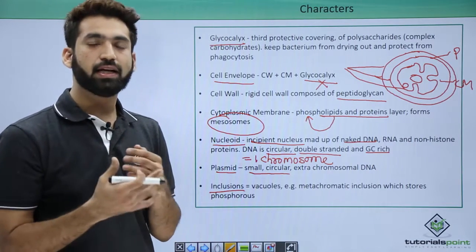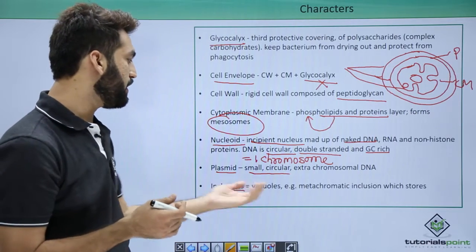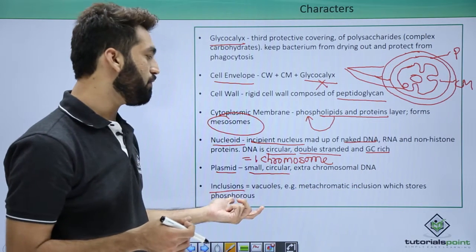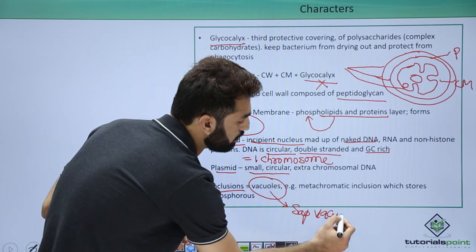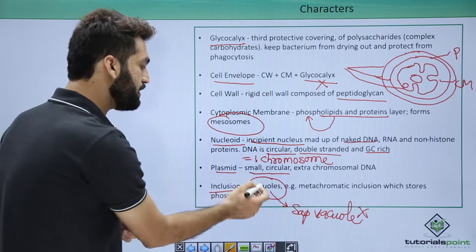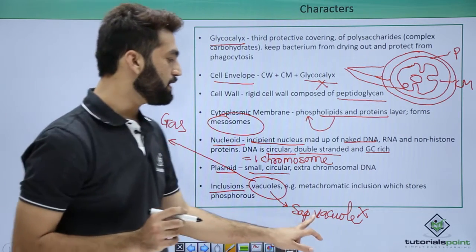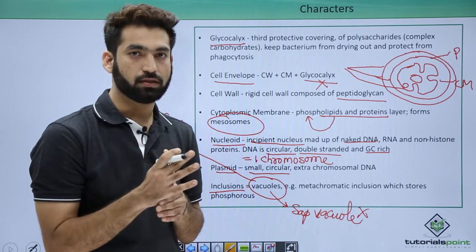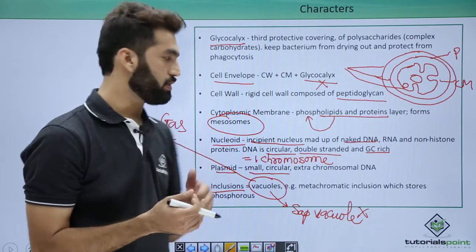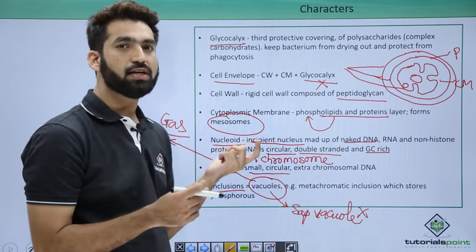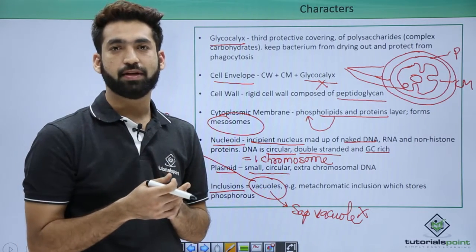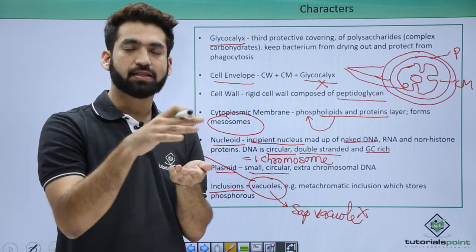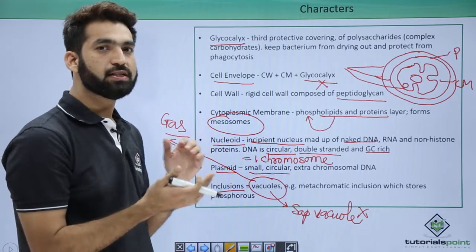Inclusions are the food reserves and food deposits in bacteria for unfavorable conditions. These can be vacuoles, metachromatic granules, starch, or phosphorus particles. Importantly, sap vacuoles — which are a combination of minerals and water — are features of eukaryotes, not prokaryotes. In Kingdom Monera, only one type of vacuole is present: the gas vacuole, which is filled with gas. The gas vacuole provides buoyancy to the bacteria, allowing them to float and not sink, similar to Archimedes' principle.